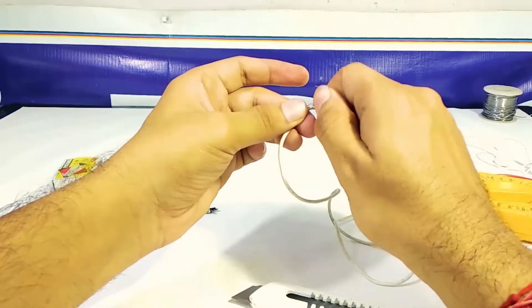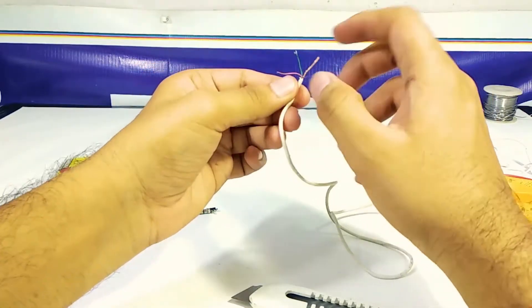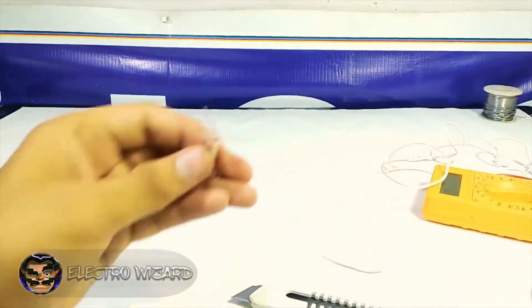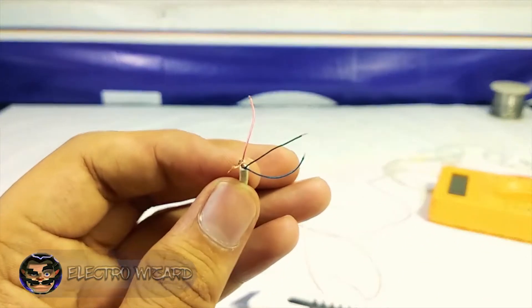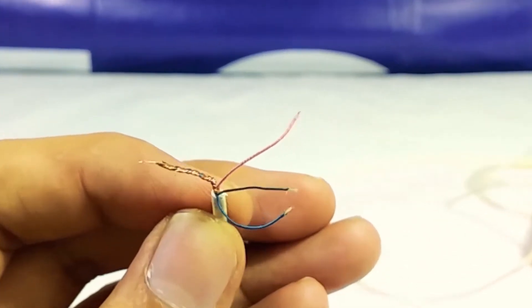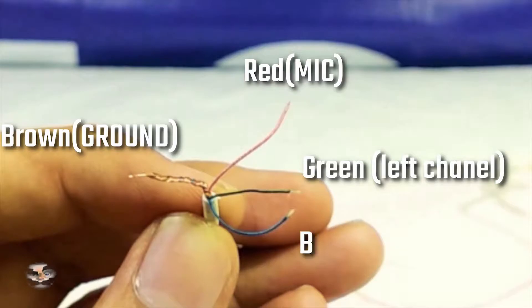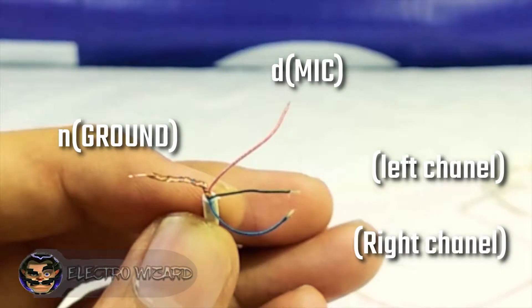Now I know the blue with stripes, green with stripes, and brown color lead is ground, so I've just shorted all of them. So now we have brown which is ground, red which is mic, green which is left channel, and blue which is right channel.